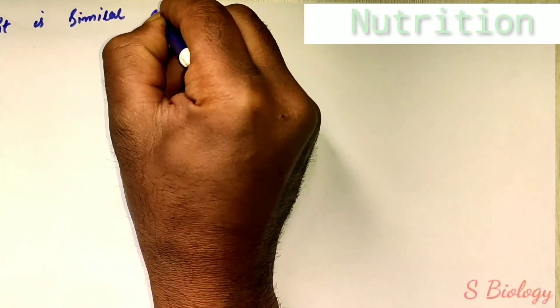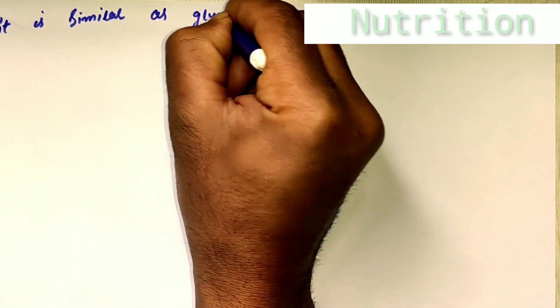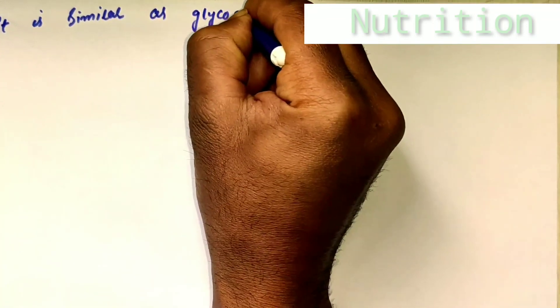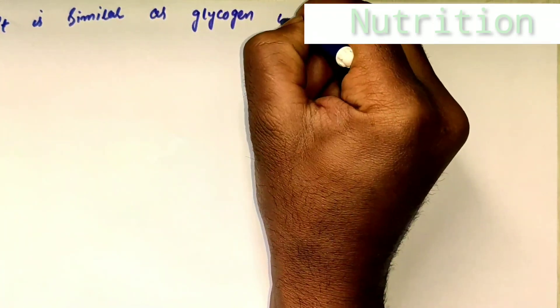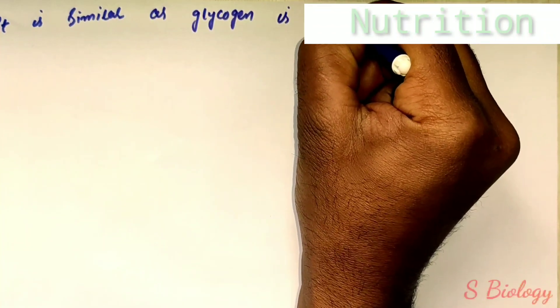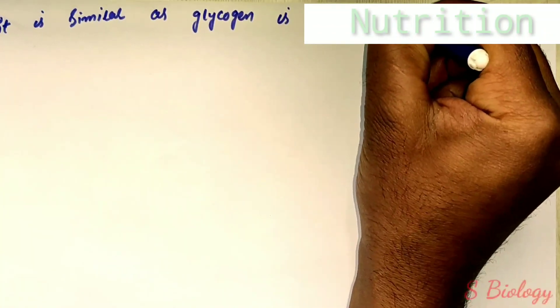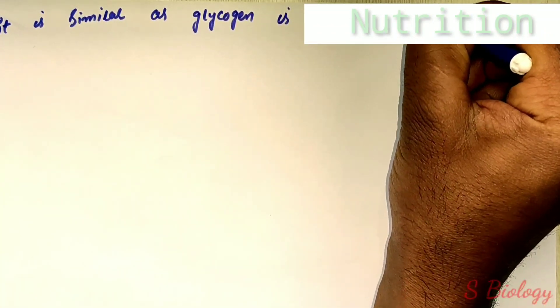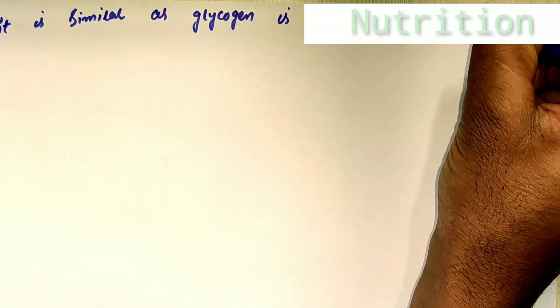Storage of glucose as starch in plants is similar to storage of glycogen as energy reserve in our body. Most photosynthesis occurs in leaves, which are green in color due to chlorophyll. A small amount of photosynthesis also takes place in young green stems.